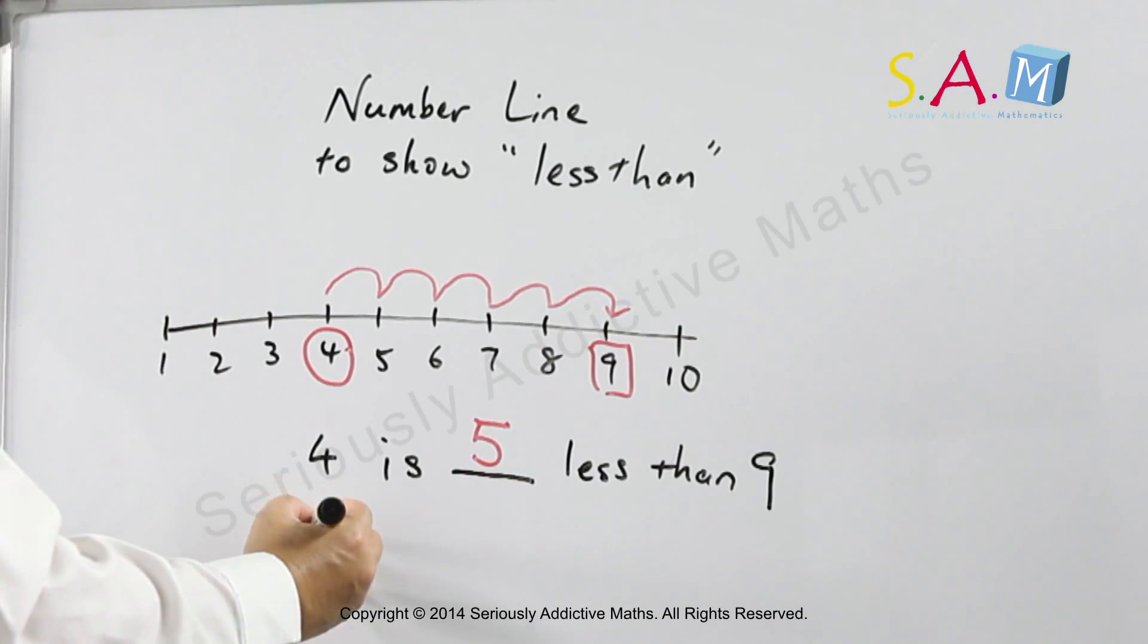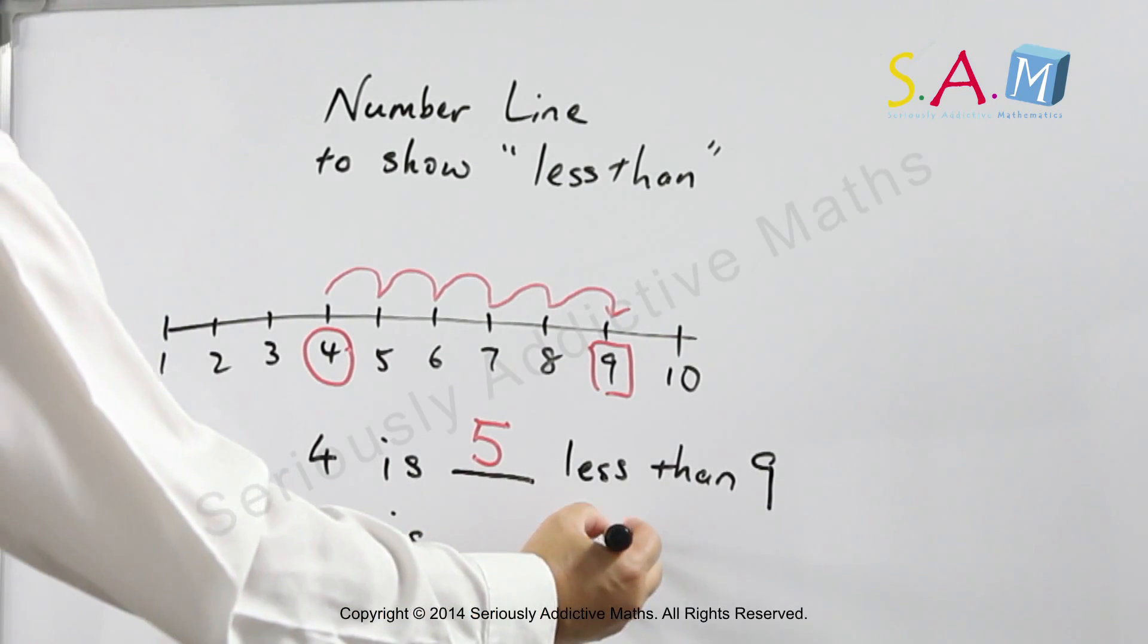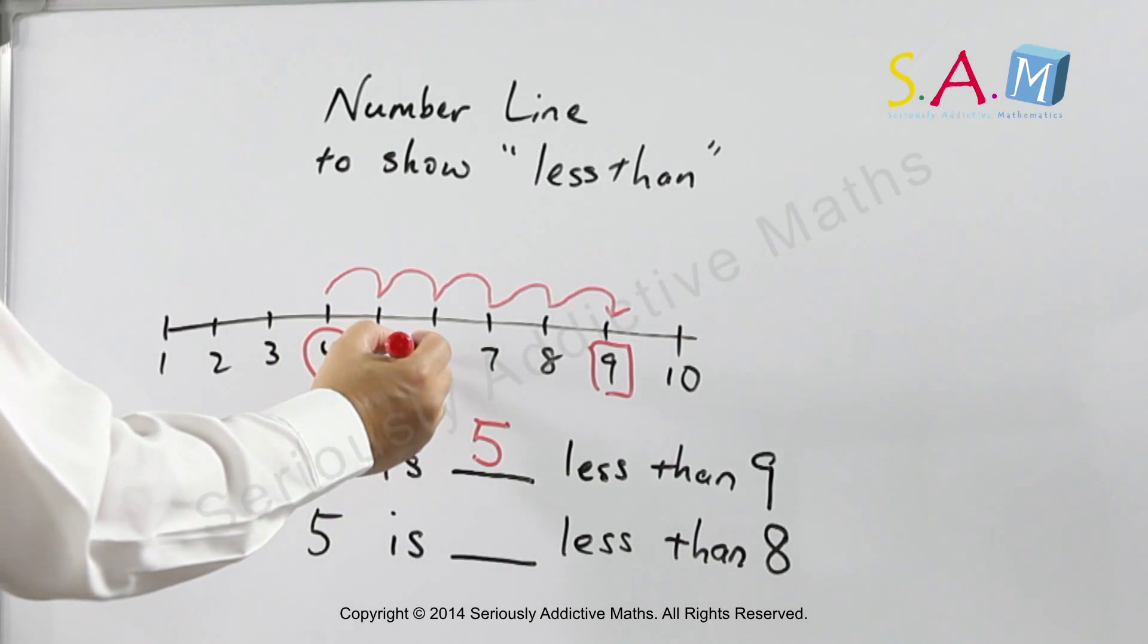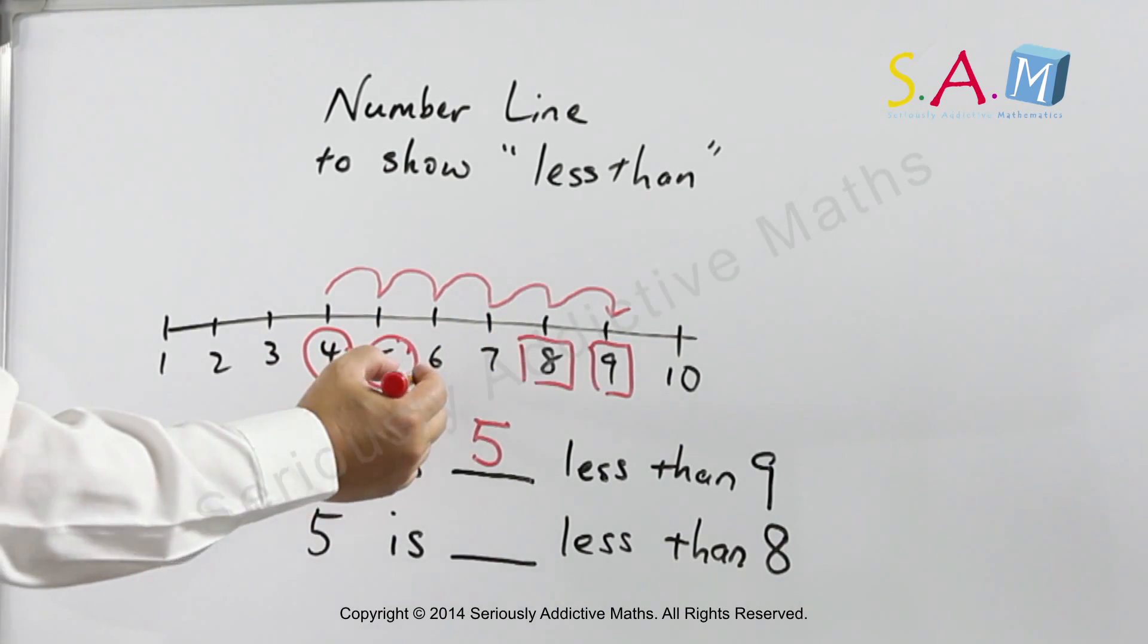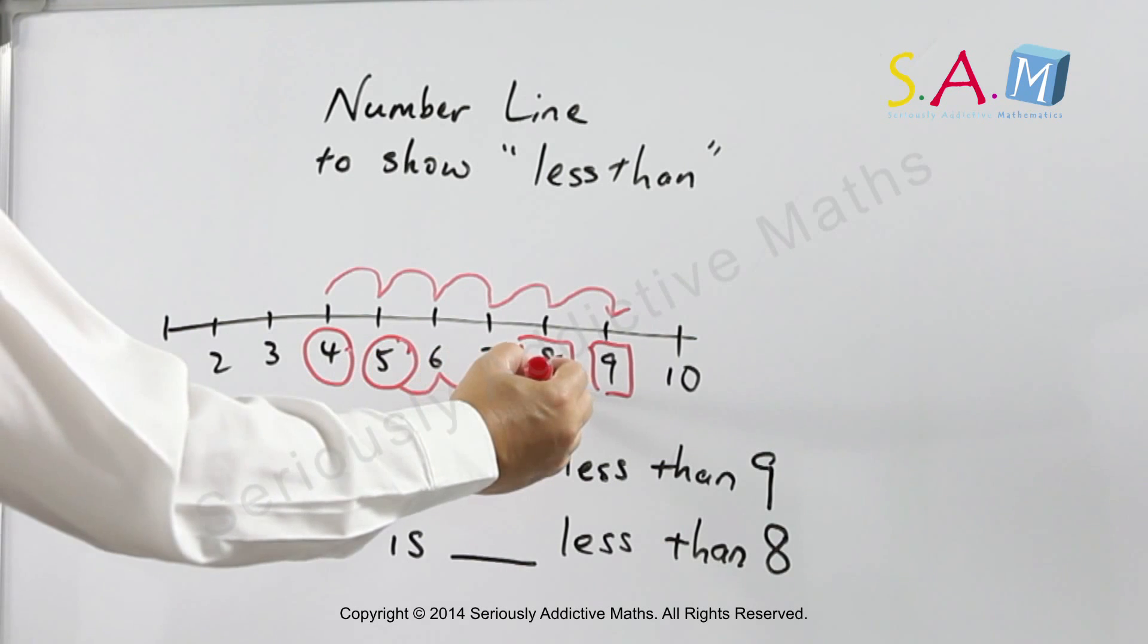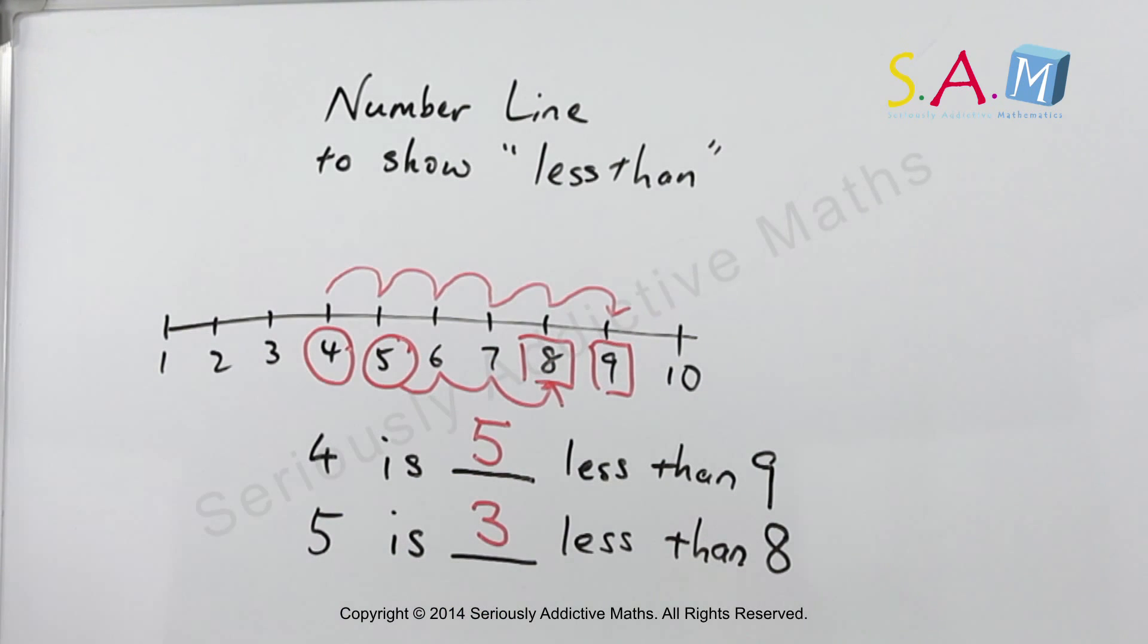Next example, 5 is how many less than 8? For example, if I have 5 and I have 8, so 5 is 1, 2, 3 less than 8. That's using a number line to show.